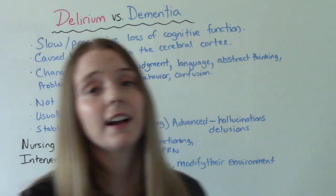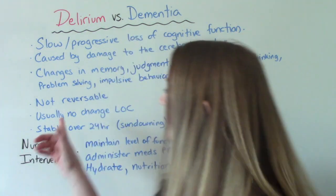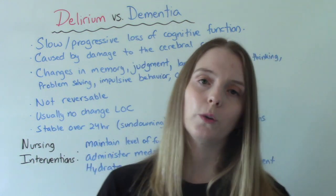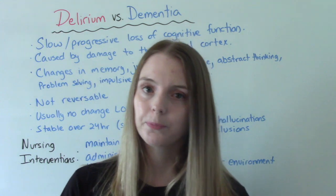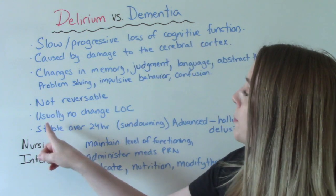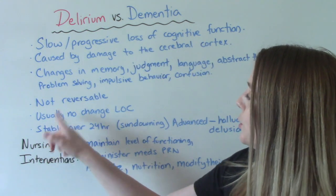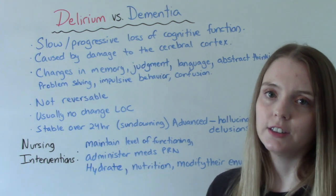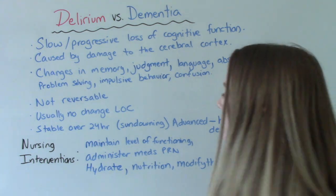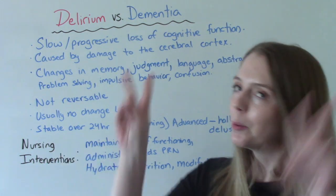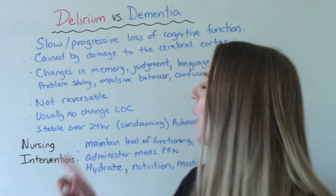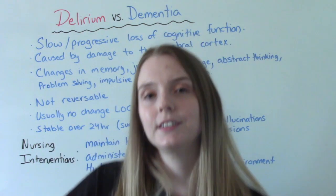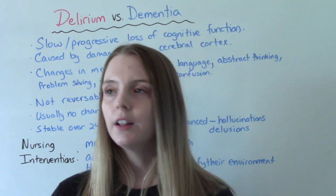Unfortunately, unlike delirium, dementia is not reversible. There is no cure for dementia. People with dementia usually have no change in their level of consciousness, and it is stable over a 24-hour period — in comparison to delirium, it is stable.